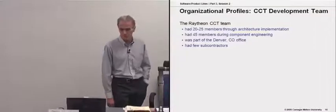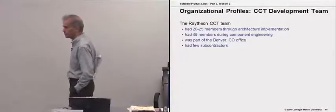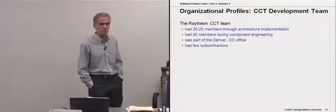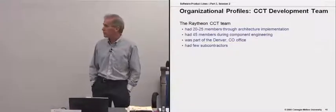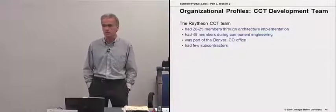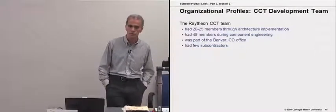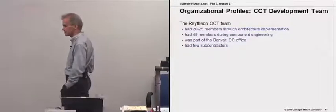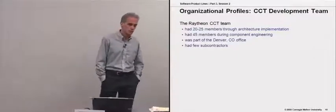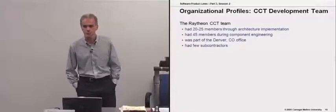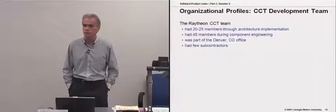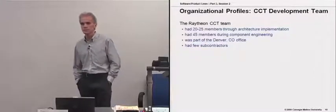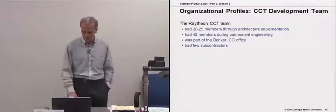The Raytheon team itself was relatively small. In terms of the organizational structures discussed in the structuring-the-organization module, this is an example of Jan Bosch's development department model, where everybody within the Raytheon organization reports to the Raytheon project manager, Jeff Shaw. Within that structure, they created teams responsible for architecture, components, testing, and an internal organization that created a test product to mimic what a real customer re-user would have to do to incorporate the CCT assets into a ground station application.